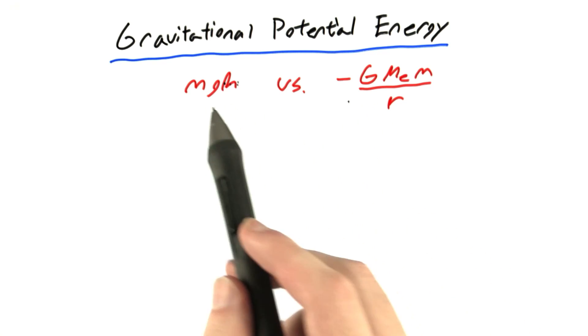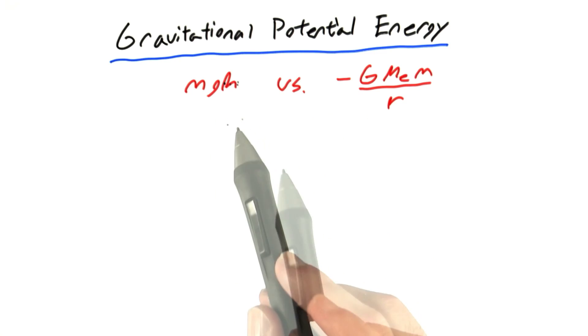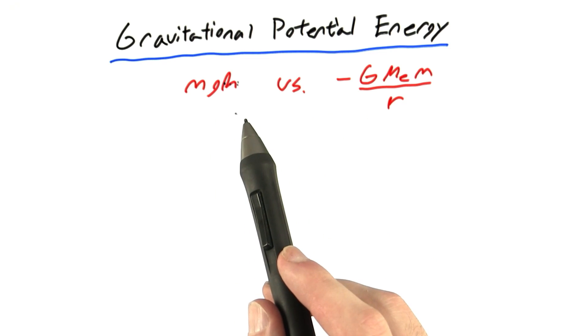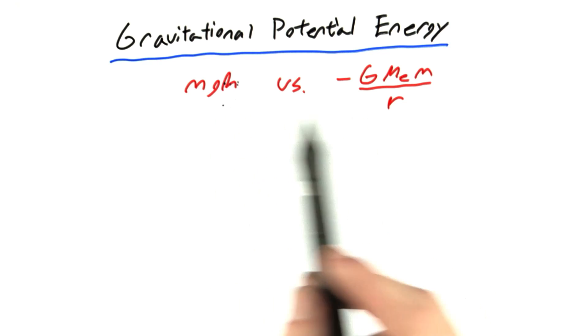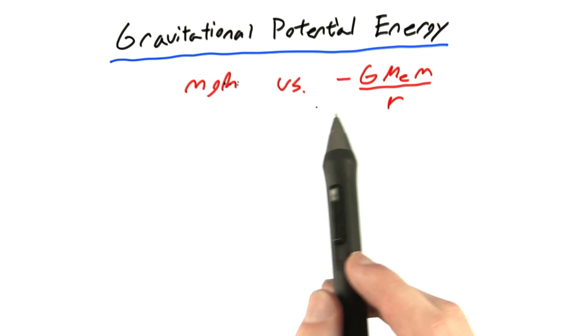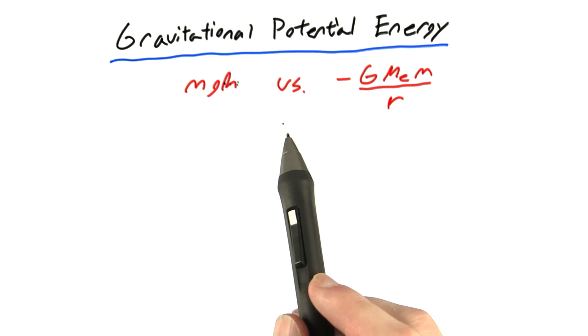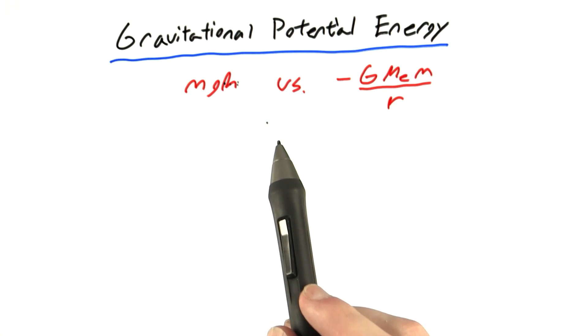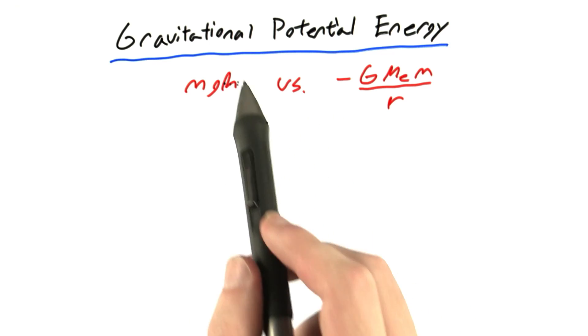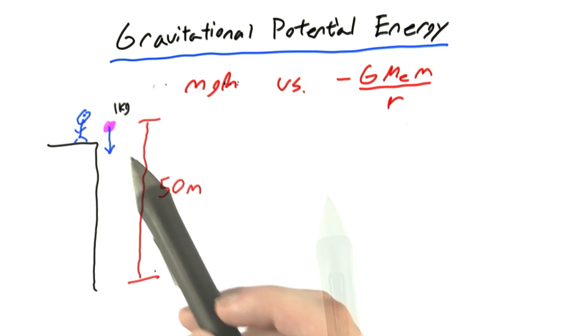So the question is, can these values really be similar? We're going to do a problem where we're going to have to use both these formulas, and we're going to see if we get similar results over small distances. And then we're going to calculate the percent error by using mgh instead of the more general formula.